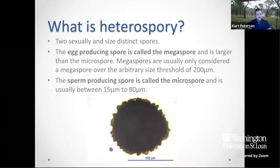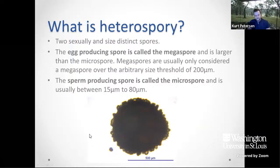So what is heterospory? Heterospory is when spores diverge into two distinct, sexually differentiated and size-distinct spores. The egg-producing spore, which is much larger, is called the megaspore. Megaspores tend to be over the size threshold of around 200 microns — this is a somewhat arbitrary threshold, and some microspores are around 180, but generally it's a good rule of thumb that if you find a spore over 200 microns it's probably a megaspore, particularly when looking at lycophytes. The sperm-producing spore is called the microspore and is much smaller, between 15 to 80 microns. In the bottom picture you can see the size difference — this is a photomicrograph I took of a large megaspore from a Selaginella and the microspore right next to it, and this megaspore is around 600–700 microns.